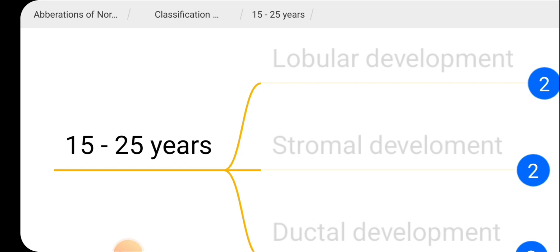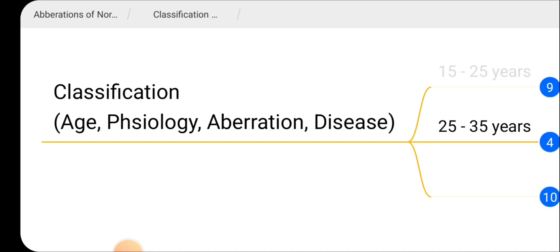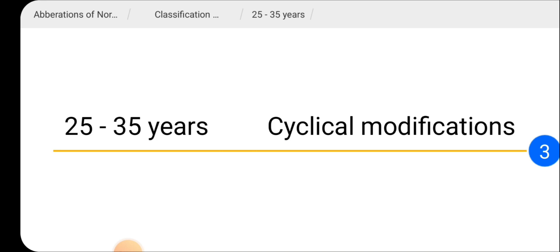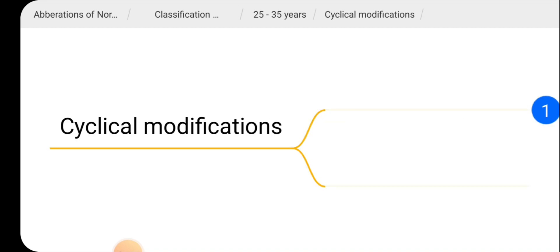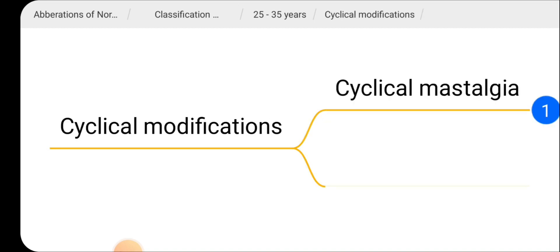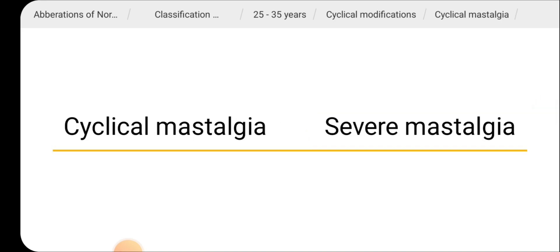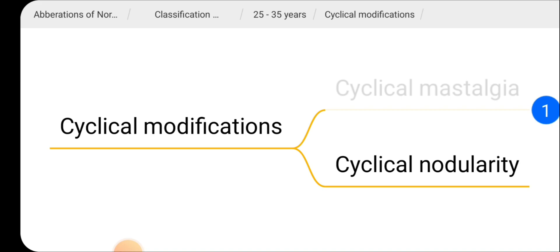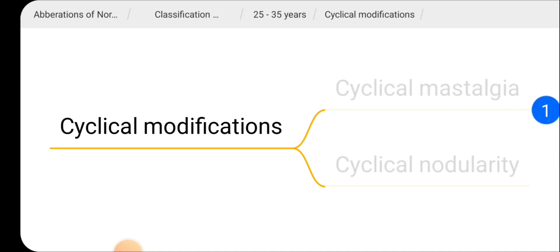Those are the benign disorders which can occur during breast development — lobular, stromal, and ductal. Next, the age group 25 to 35 years: during this period the breast undergoes cyclical modification. In cyclical modifications, aberrations include cyclical mastalgia — cyclical breast pain — and cyclical nodularity.